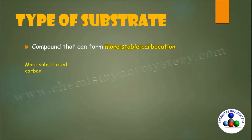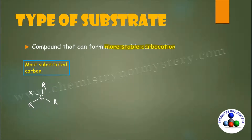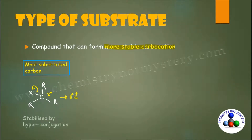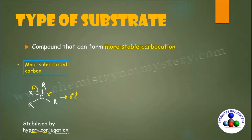The first category: substrates where the reactive carbon is more substituted prefer SN1. For example, if this reactive center carbon is a tertiary carbon, once the leaving group leaves, it results in a tertiary carbocation that is stabilized by hyperconjugation. Such molecules prefer to react via SN1.